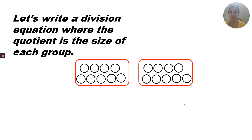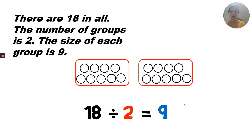Let's write a division equation where the quotient is the size of each group. Remember, the quotient is the answer in a division equation. We want to start with the biggest number. There are 18 in all, the number of groups is two, and the size of each group is nine. So 18 divided by two equals nine.